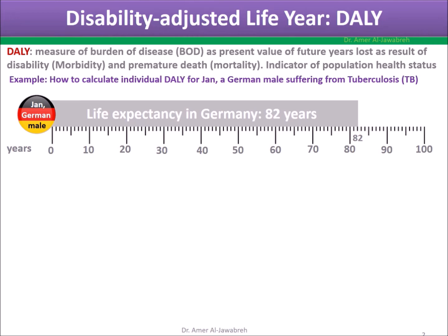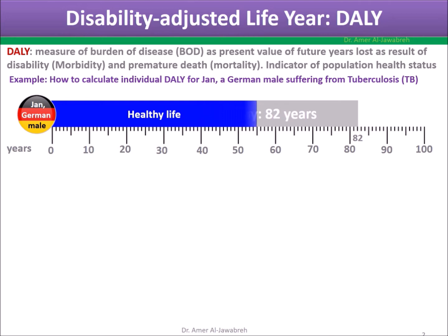Example on how to calculate individual DALY for Jan, a German male suffering from tuberculosis. Here is Jan's life timeline in years, showing healthy life until age 55, disability from 55 to 70, death at 70, and life expectancy in Germany at 82.